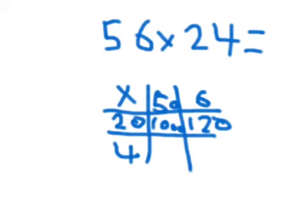Then I have to do 4 times 50. If I know 4 times 5 is 20, then I just add the 0, which is 200. And then finally, 4 times 6 is 24. I add all of these up.